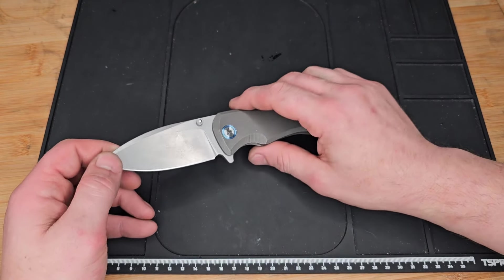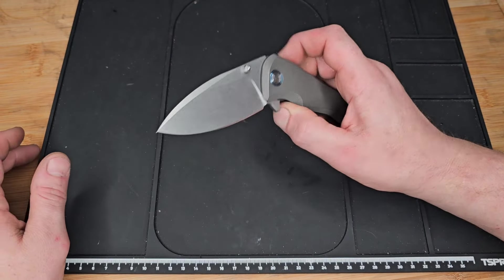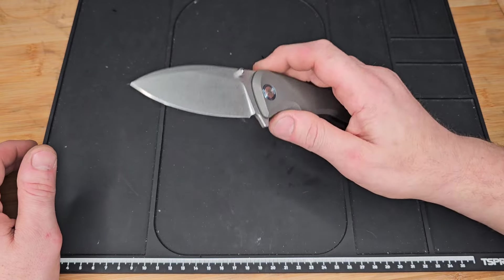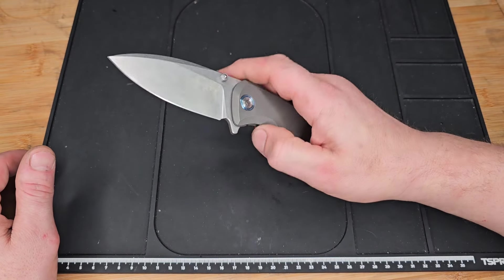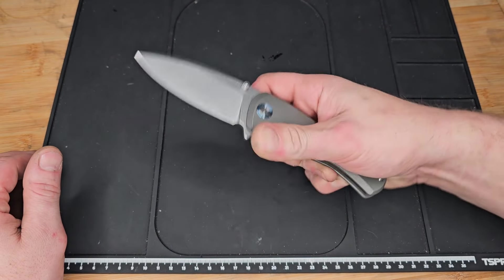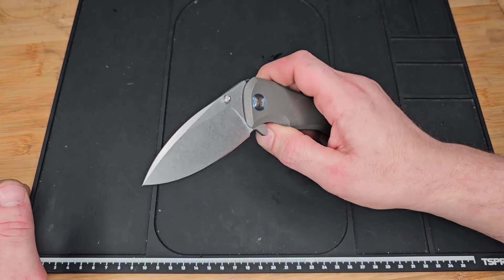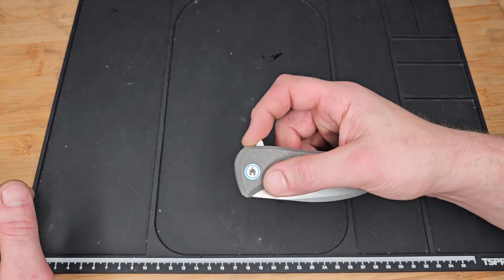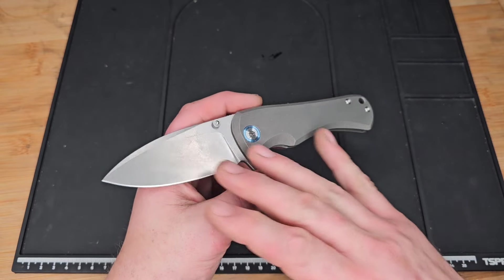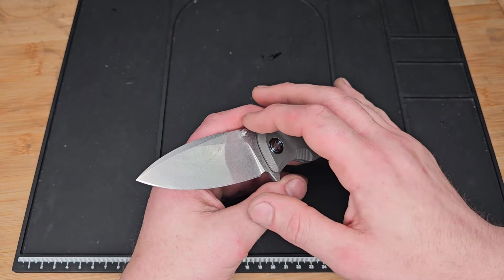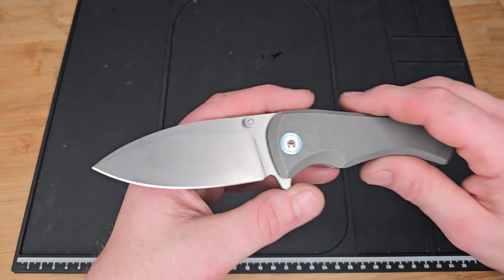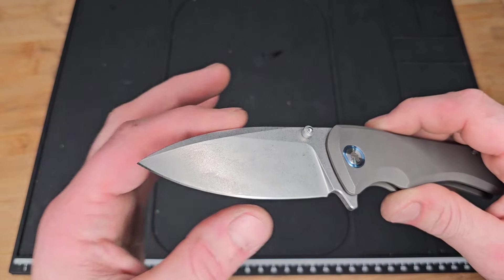Today we're checking out seven knives that shocked me how good they were when I tried them for the first time. Starting it off with the Warblades Anubis. Warblades has, I think, two different models that are very similar. One has more of a bigger belly drop point and then this one's more of a leaf shape or a spear point.